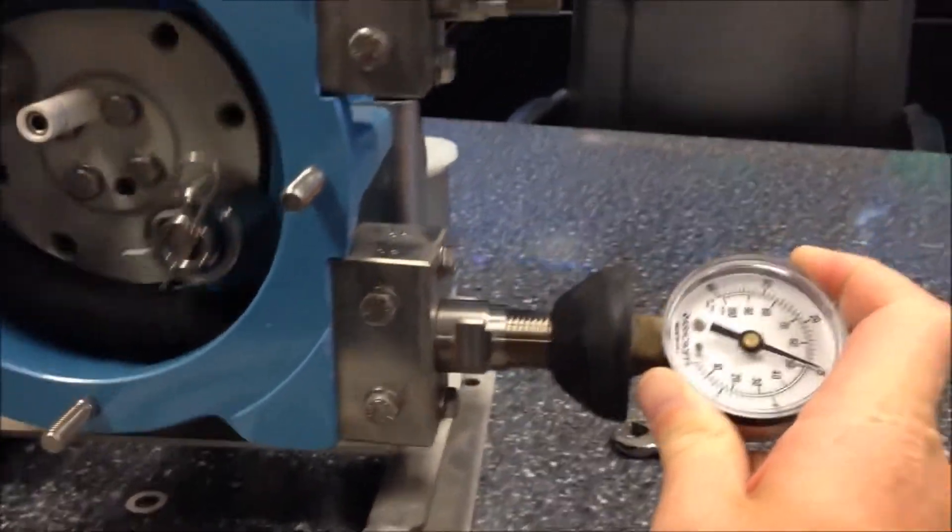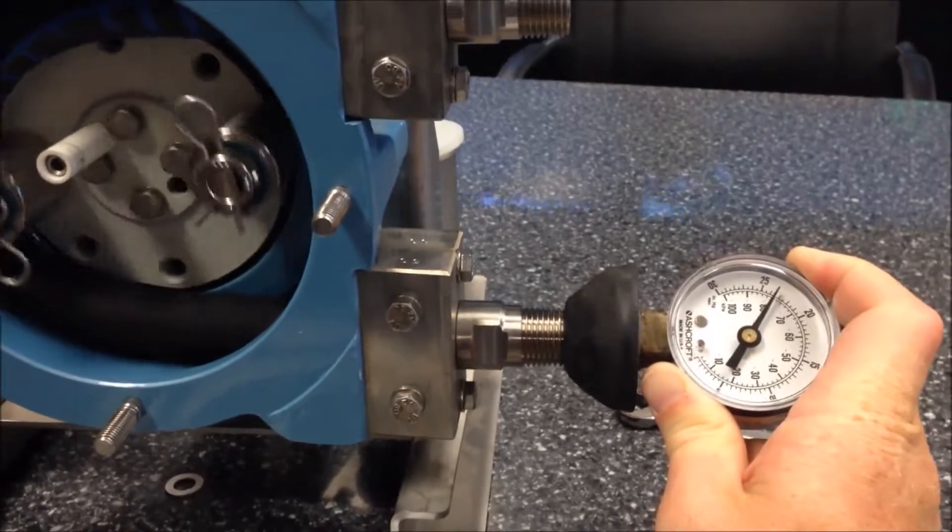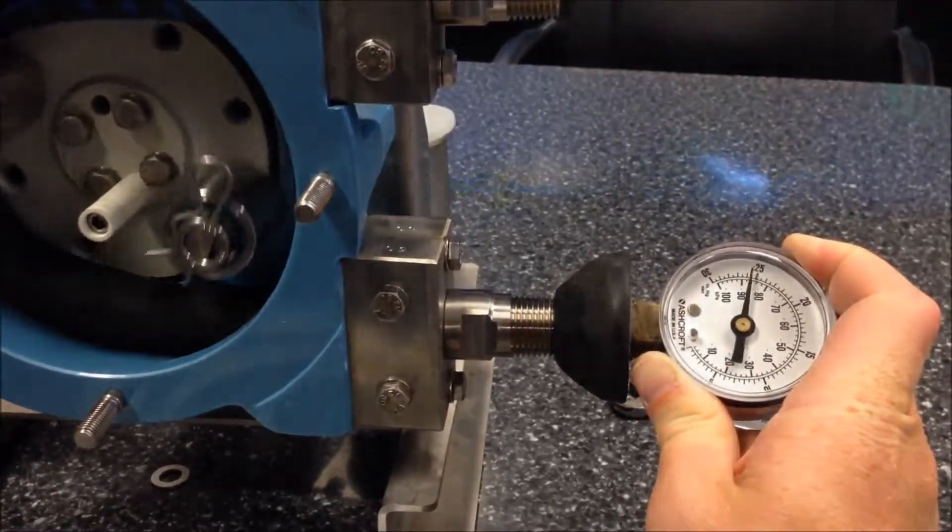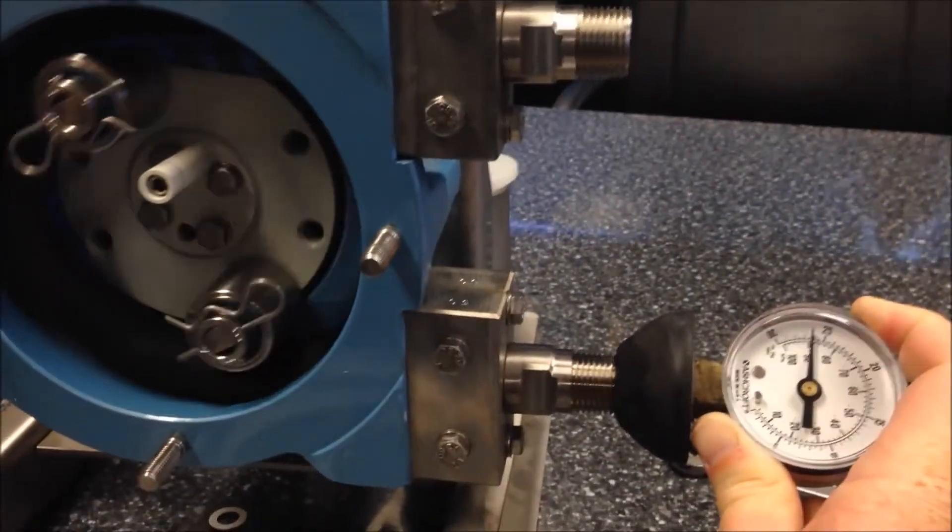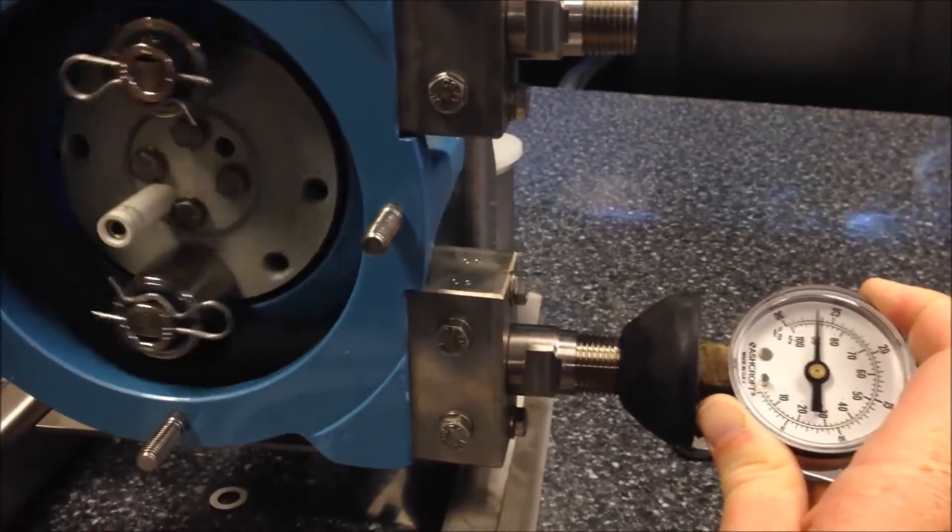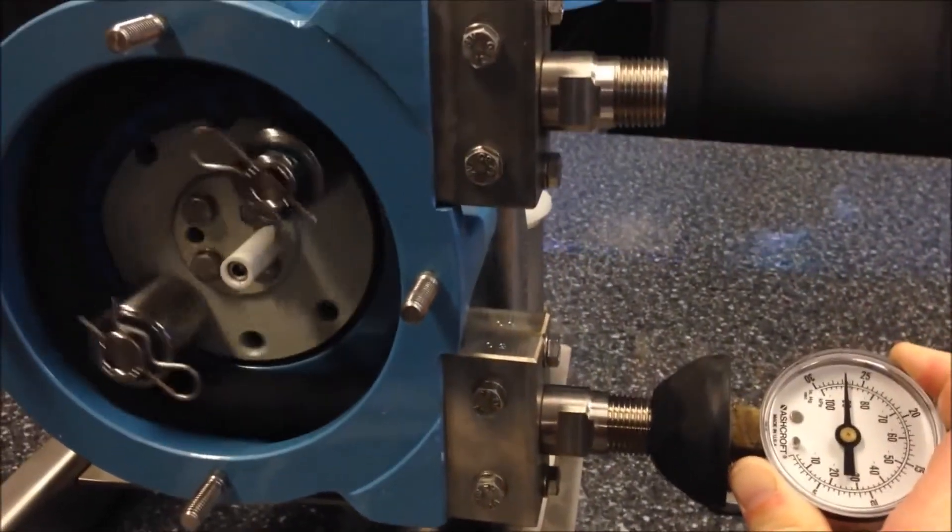We immediately begin to build vacuum. The pump will generate an excess of 25 inches of mercury, closer to about 27. We'll maintain that.